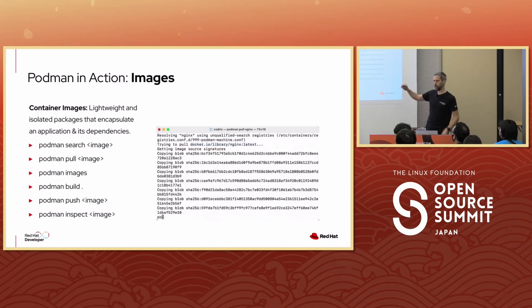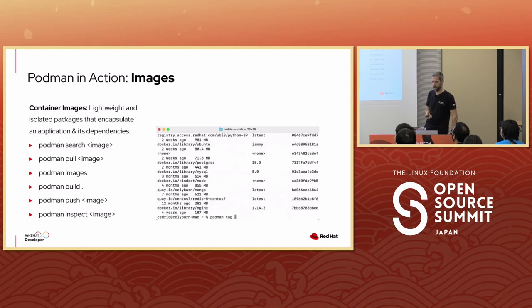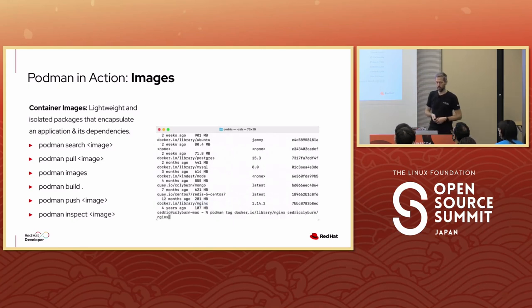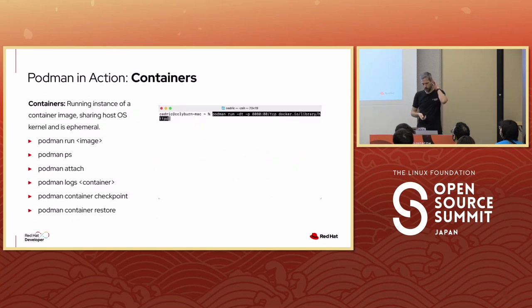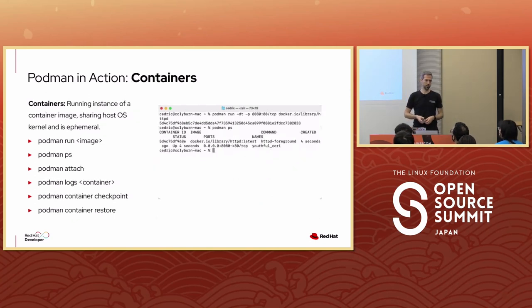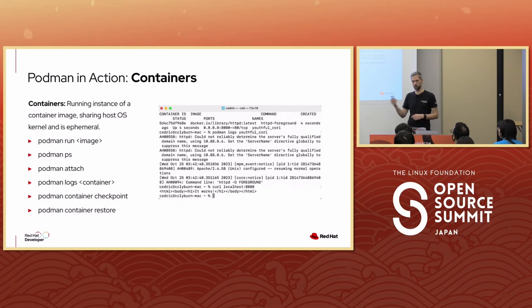For example, if I want to list my container images, I can just do 'podman images'. If I want to build my container, it's just 'podman build'. If I want to run my container, I can do 'podman run'. I can look at containers that are running with 'podman ps', or attach to a container and so on.